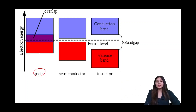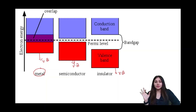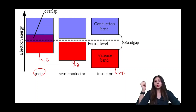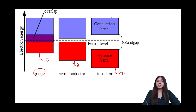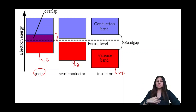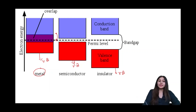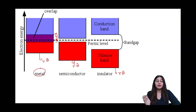In metals, as you can see, the valence band and conduction band are overlapping. So there is no energy barrier which the electrons have to cross — electrons are so easily moving to the conduction band that conduction is readily happening. In case of metals, there is no energy gap or maybe just a very little energy gap, and that is why conduction is very easy in case of metals.